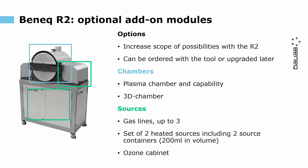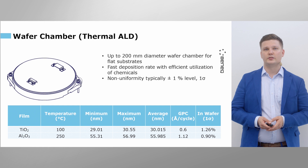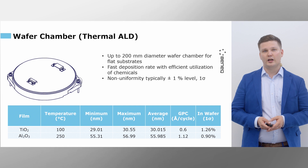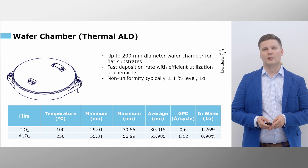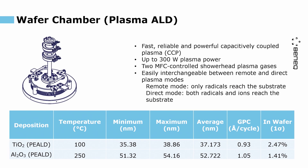There are multiple options you can add to the R2. For example, you could add a 3D chamber and then a set of heated sources. The standard wafer chamber for thermal processing is for up to 200 millimeter substrates. The uniformity levels are high, typically for standard oxides at a level of 1%.